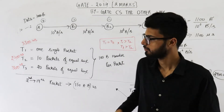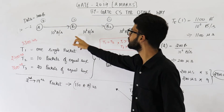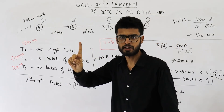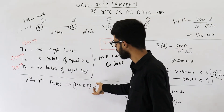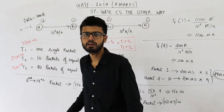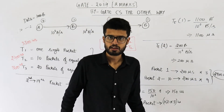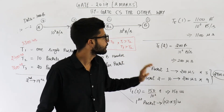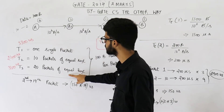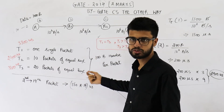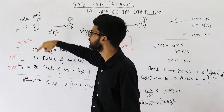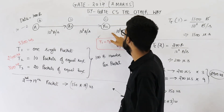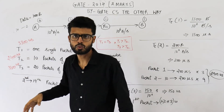A useful tip: you can completely ignore the actual bandwidth value. Just take bandwidth as some constant x, because we are not required to find the exact time values — we just want to compare T1, T2, and T3. Since the bandwidth is the same in all three cases and only the packet size changes, you can simplify calculations significantly.